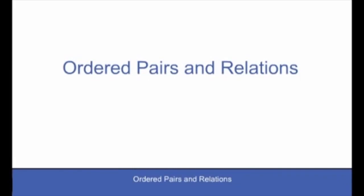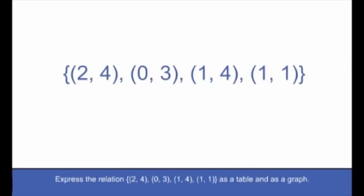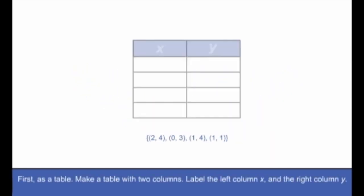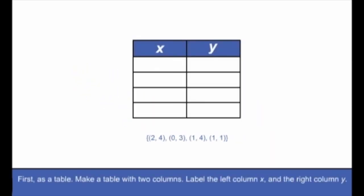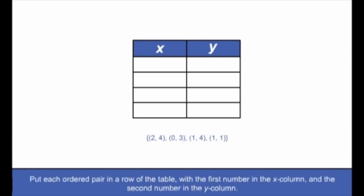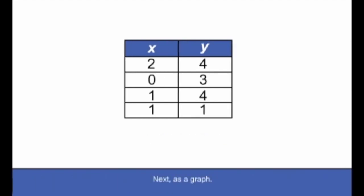Ordered pairs and relations. Express the relation {(2,4), (0,3), (1,4), (1,1)} as a table and as a graph. First, as a table: make a table with two columns, label the left column x and the right column y, and put each ordered pair in a row with the first number in the x column and the second in the y column. Next, as a graph: plot each point.